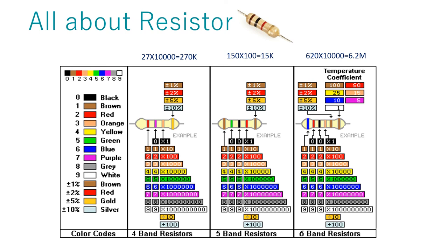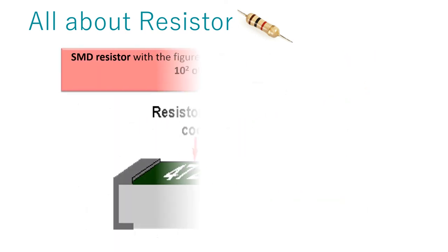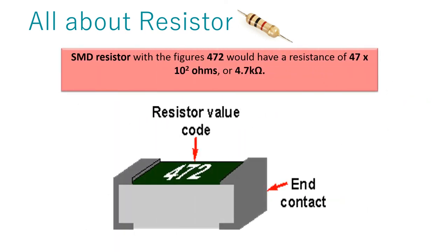Last color is of tolerance. Resistors can have up to 6 color bands. First three colors indicates resistor value, and the rest colors indicates the characteristics of the resistor, like tolerance and temperature coefficient. In SMD resistors, the values are printed in the form of numbers, such as 472 means 47 multiplied by 100, and it is 4.7 kilo ohms.